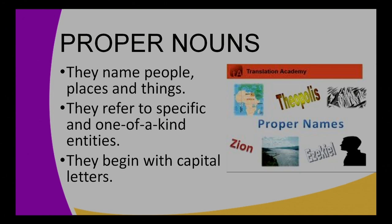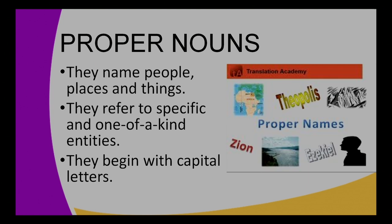Let's start with proper nouns. Proper nouns name people, places, and things. They refer to specific and one-of-a-kind entities — meaning there is only one of such an object. Your name is a proper noun, a name of a place is a proper noun, and a name of a brand is a proper noun. Also note that proper nouns start with a capital letter regardless of where they appear in a sentence.